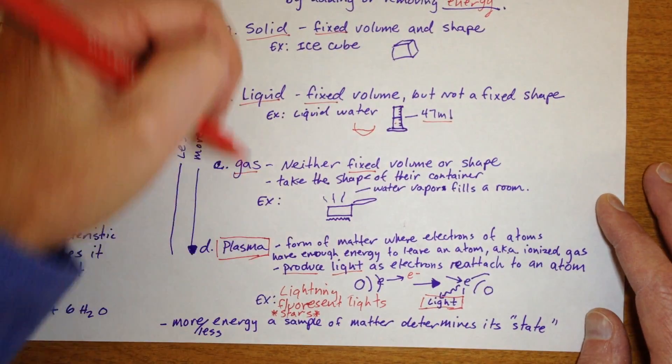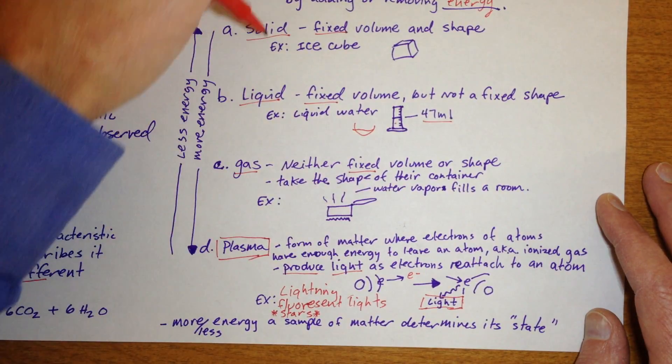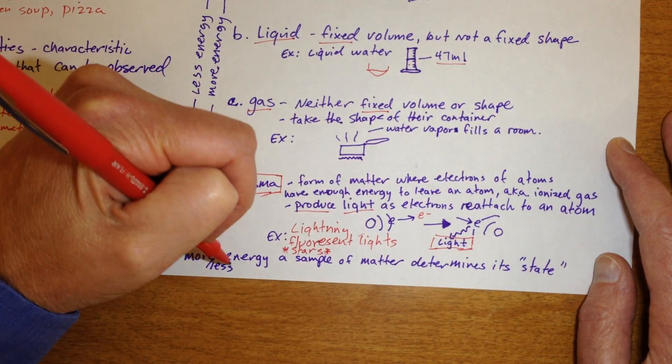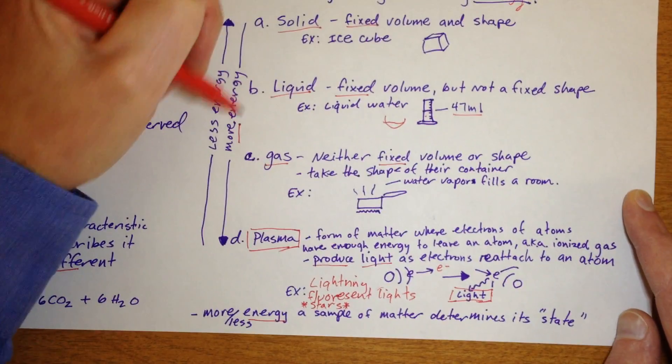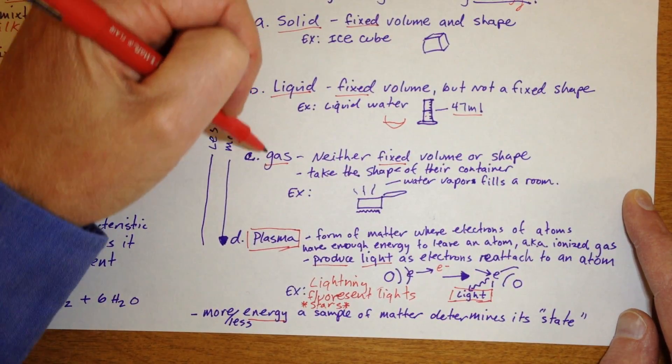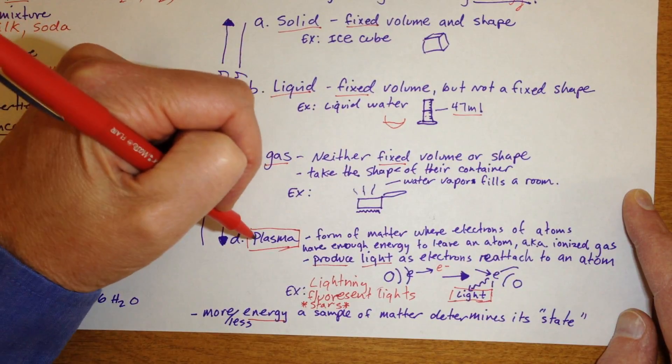So where you are as a sample of matter is on this kind of line of states of matter really depends on how much energy it has. If it has more energy, it's going to be moving from a solid to a liquid or a liquid to a gas. Or even lots of energy can move to a plasma.